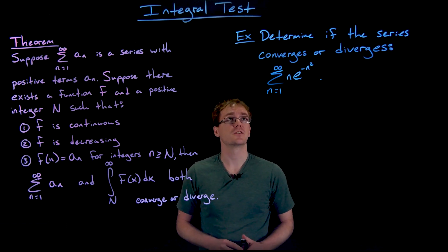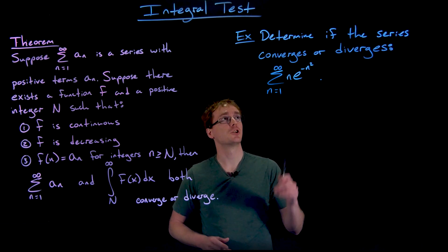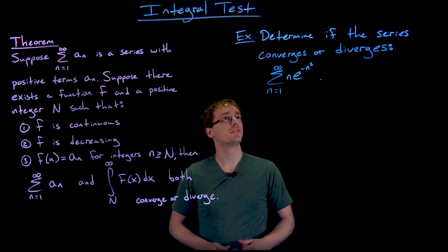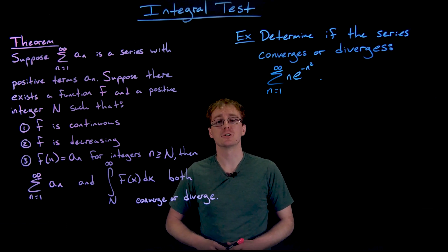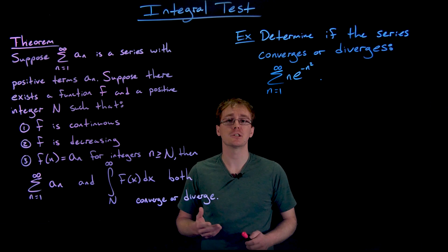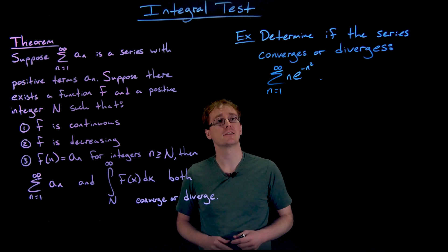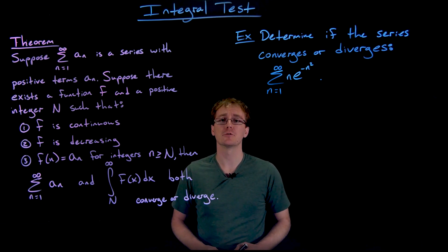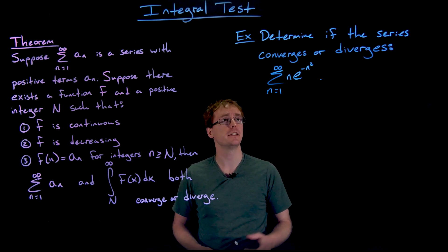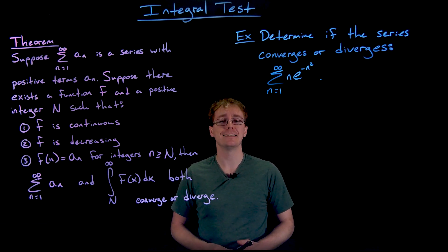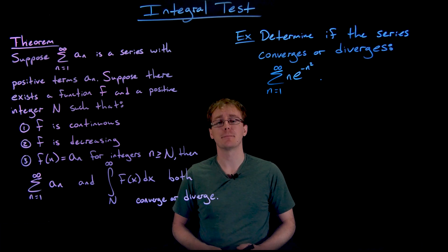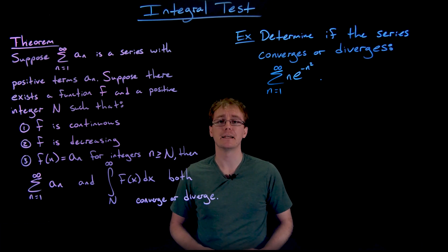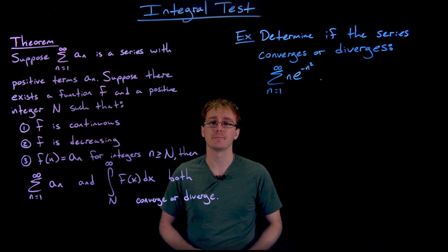All right, so for our next example, we're again trying to determine if this series converges or diverges, and now we're looking at the series, the sum from n equals 1 to infinity of n times e to the power of negative n squared.